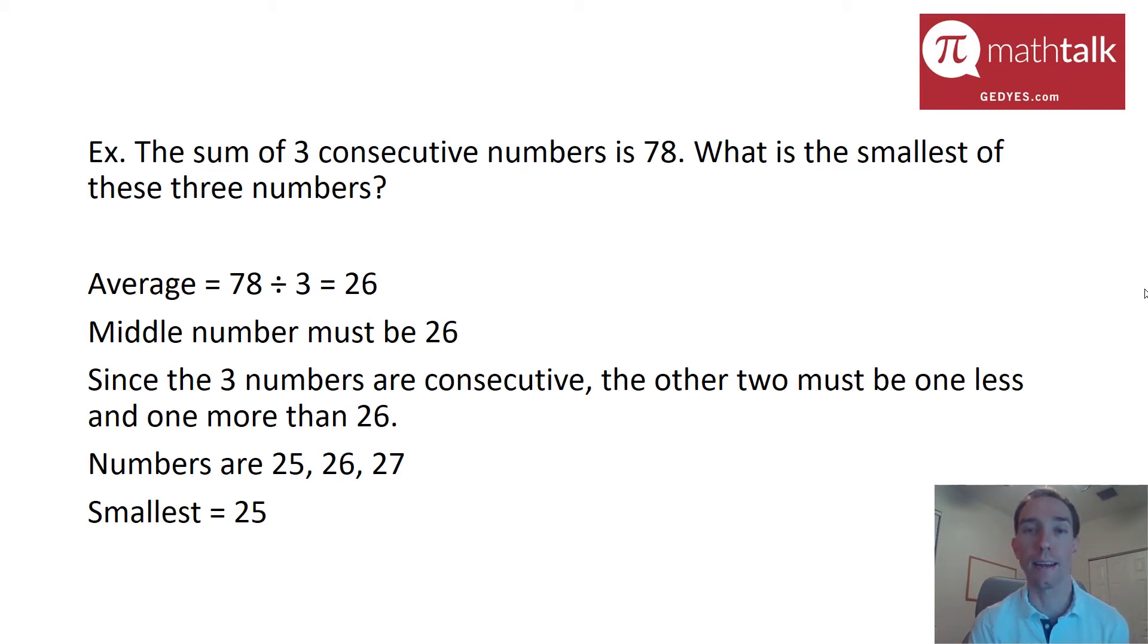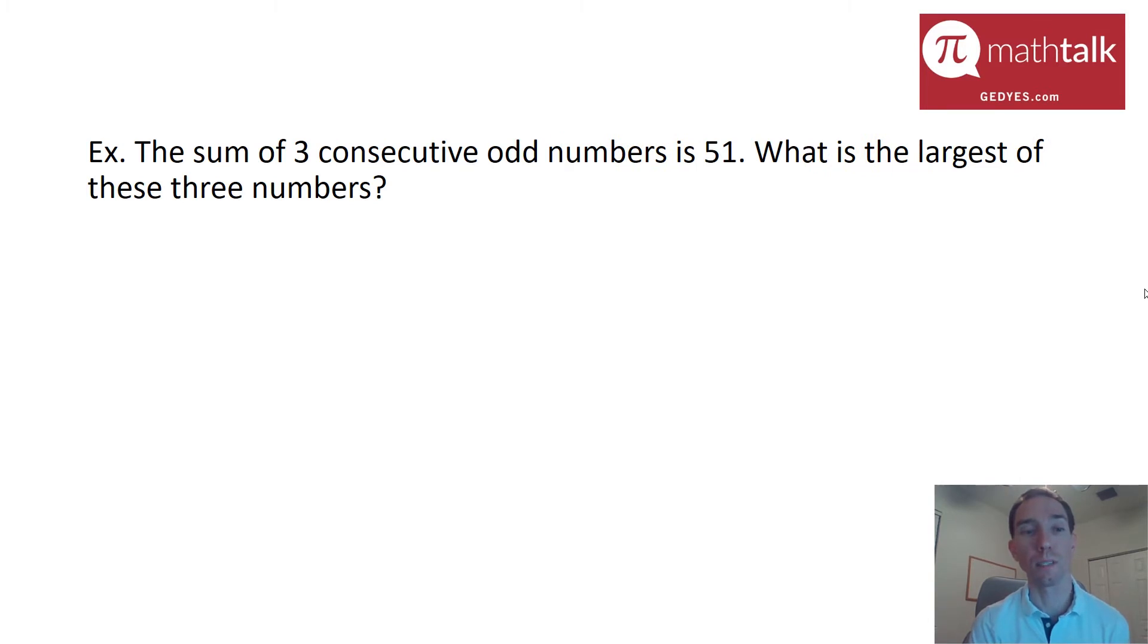Let's take a look at another similar example. This one says the sum of three consecutive odd numbers is 51, and asks what is the largest of these three numbers. We're going to approach this example the same way we just looked at the last one without setting up any equations. Again, I have three consecutive numbers. In this case, they're consecutive odd numbers, which is key. But still, because they're consecutive, the average of those three is always going to be the middle. So let's take the average: 51 divided by 3, I get 17. That means my middle number is 17.